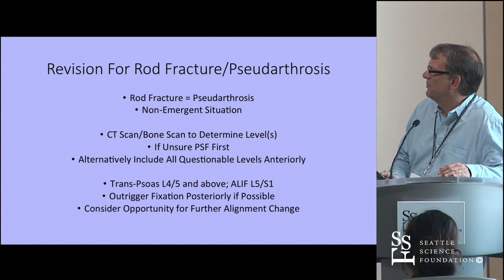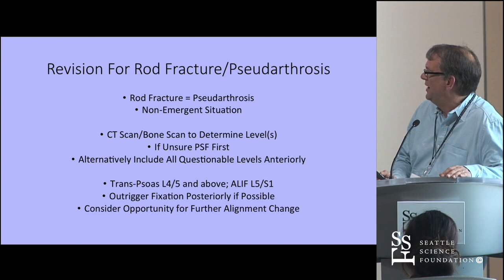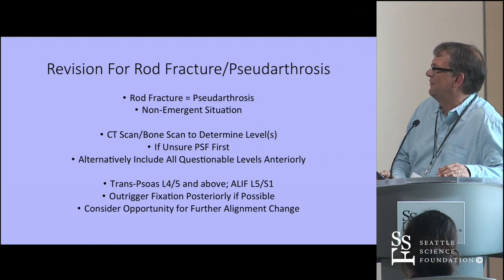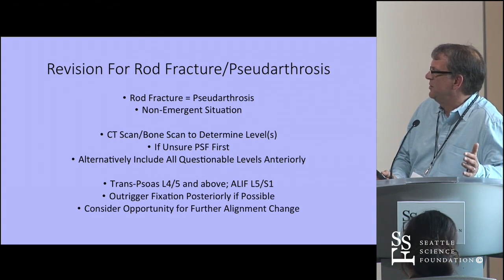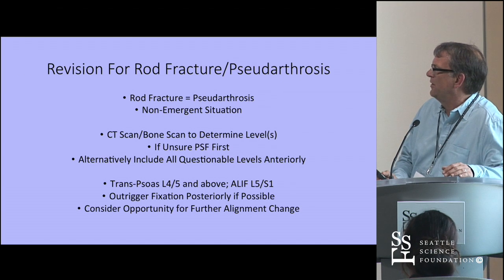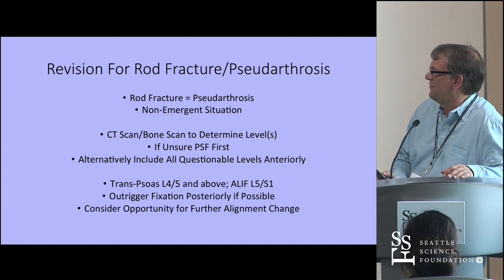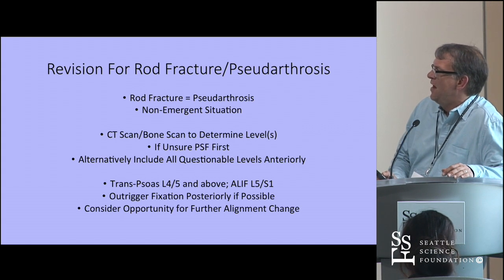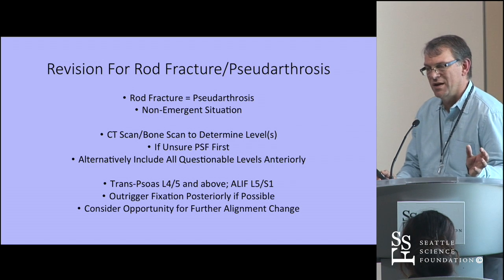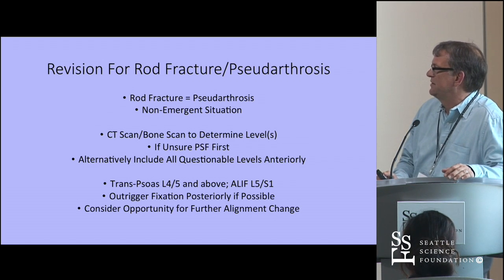For revision anterior surgery, a transpsoas approach is used at L4 and above, and a straight anterior interbody at L5-S1 in most cases — though the OLIF technique may change this approach. For posterior instrumentation, the goal is to limit what is done — in most cases hardware does not need to be removed; instead, outrigger fixation spanning the fractured rods is placed, reducing the overall operative impact. If ongoing deformity issues exist, revision is also an opportunity for further sagittal plane correction.